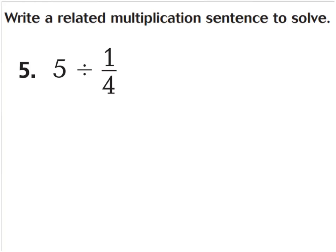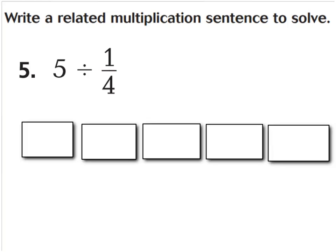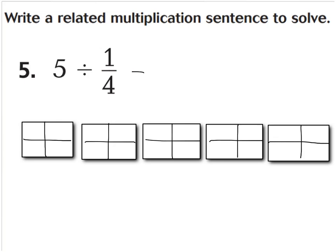For number five, it's very similar to number three. If I have five wholes divided by one-fourth, think of it like this: if I had five pieces of cake and I want to know how many one-fourth pieces are in five wholes. All you have to do is draw a model of five wholes and cut each whole into fourths. Here are my five wholes. If I were to cut each of my wholes into fourths, how many one-fourth pieces would I have? Counting by fours: four, eight, twelve, sixteen, twenty. So five divided by one-fourth equals twenty. Our related multiplication sentence is five times four, because we have four one-fourths in each whole, giving us twenty as our answer.